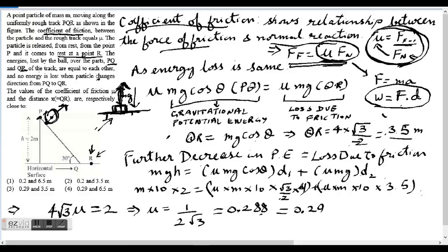So how do we approach this question? In the question, it is given that when the ball moves from P to Q and then from Q to R, the energies lost are equal.